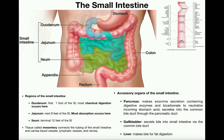The small intestine is divided into three regions of unequal length. It's easy to fall into the thought that they're equal lengths, but the duodenum, the jejunum, and the ileum are actually all different lengths.